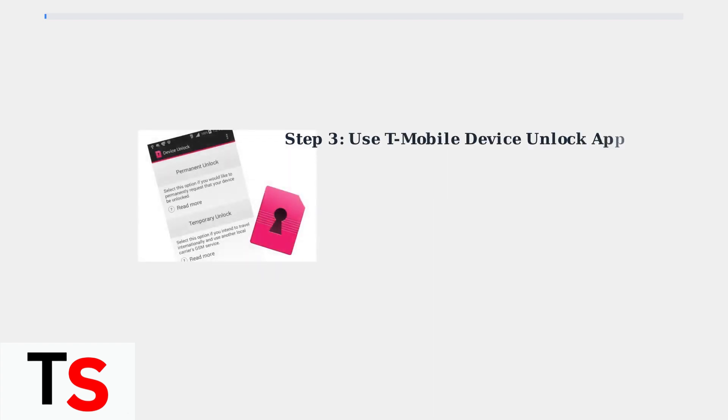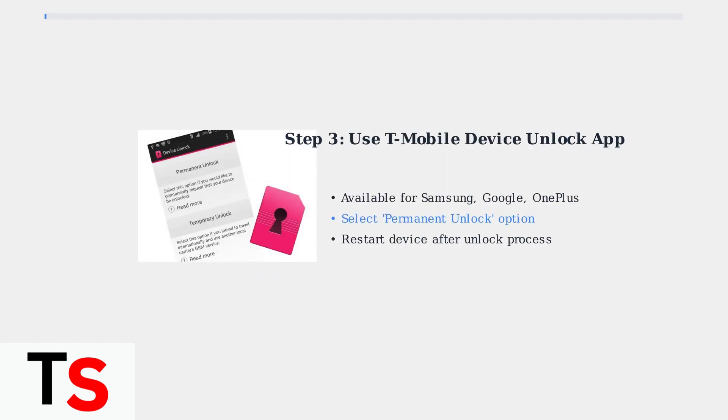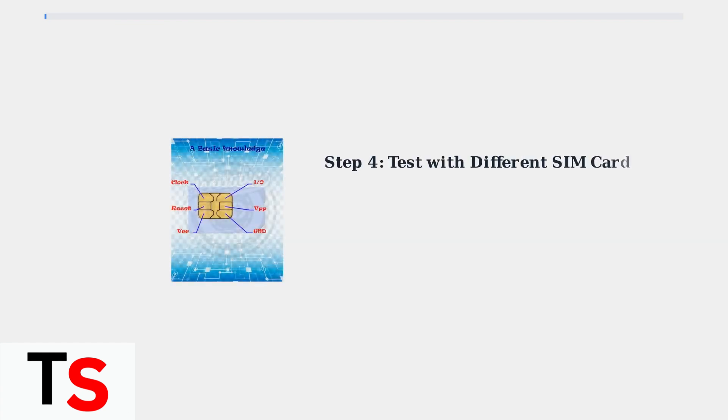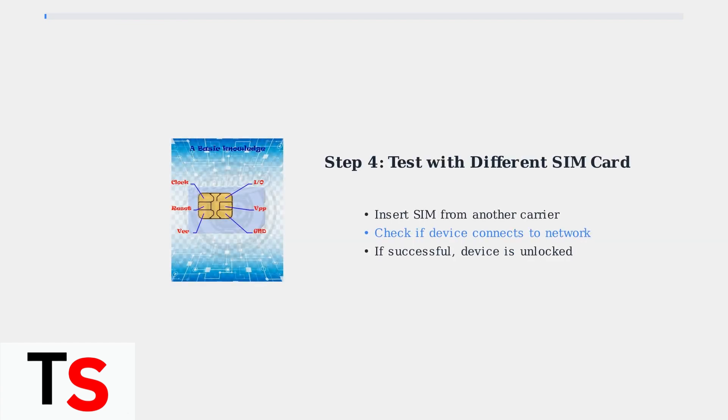T-Mobile provides a device unlock app for certain phones including Samsung, Google, and OnePlus devices. This app can perform both temporary and permanent unlocks when your device is eligible. You can also insert a SIM card from a different carrier to test if your device is already unlocked — this simple test can confirm whether the unlock process was successful.